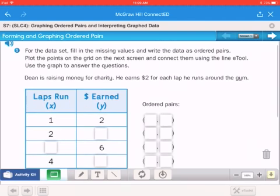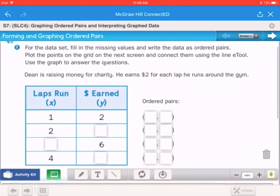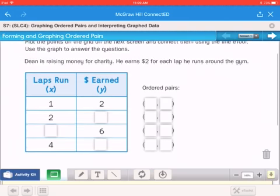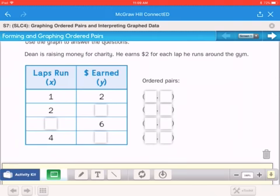Plot the points in the grid on the next screen and connect them using the line tool. Use the graph to answer the questions. Dean is raising money for charity. He earns $2 for each lap he runs around the gym.